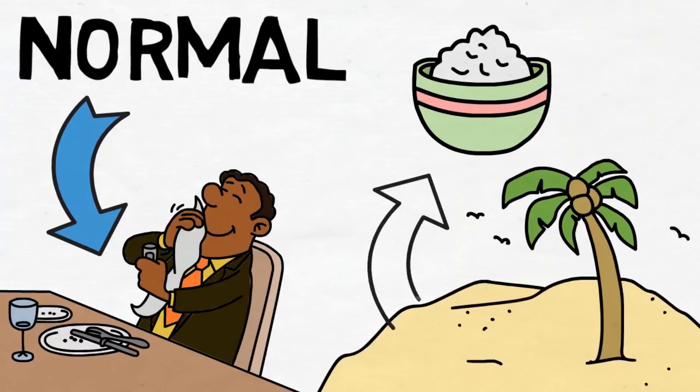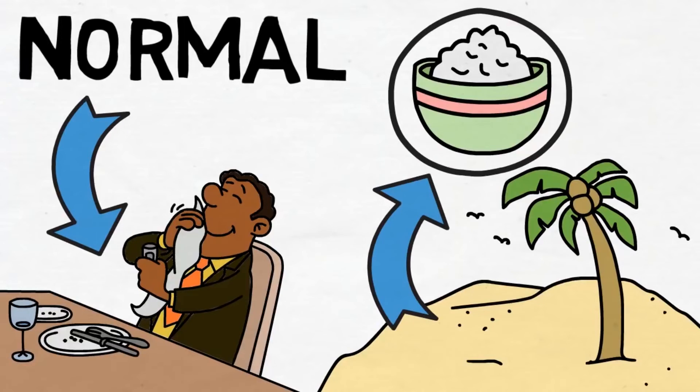And that is what the dopamine detox does. It starves you of all the pleasure you usually get, and in turn it makes those less satisfying activities more desirable. To put it simply, dopamine detox works because you become so bored that boring stuff becomes more fun.